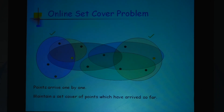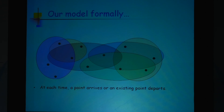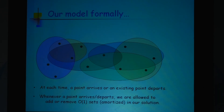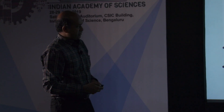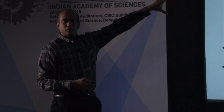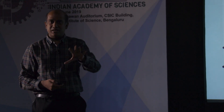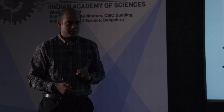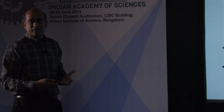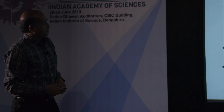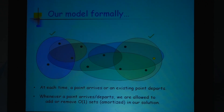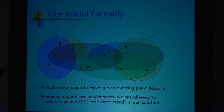The problem is that you do not know what the entire set of points will be. As points arrive, you build up your solution. At each time a point arrives or departs, and you have to maintain a set of disks covering all points. The model is exactly the same: whenever a point arrives or departs, you can add one more disk or remove an existing disk from your solution.